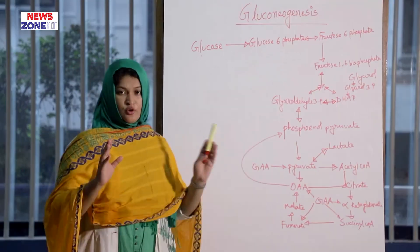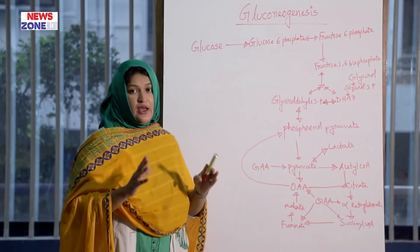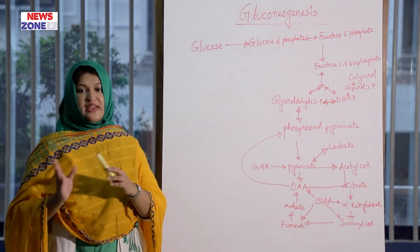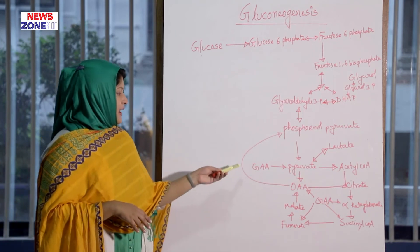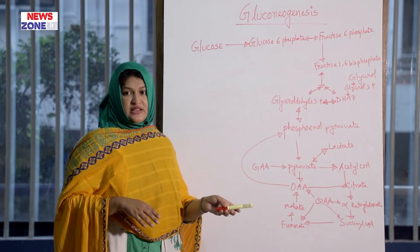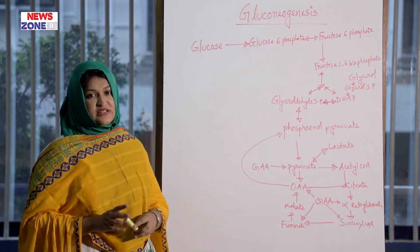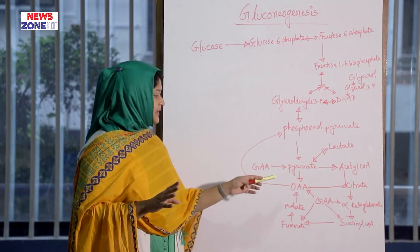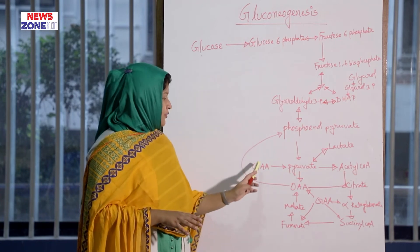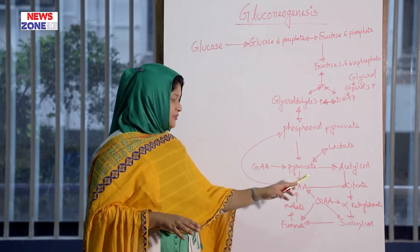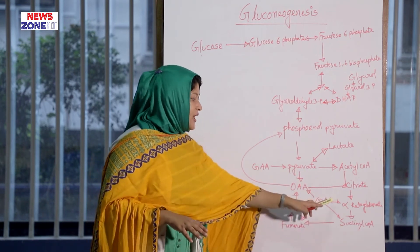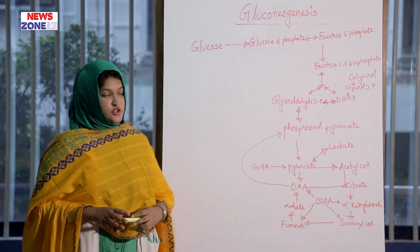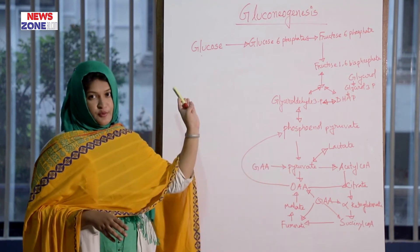The gluconeogenic enzymes are the rate-limiting enzymes that make all irreversible steps reversible. Glucogenic amino acids are all amino acids except leucine and lysine. Through five entry points, glucogenic amino acids can convert into glucose: via pyruvate, succinyl-CoA, alpha-ketoglutarate, fumarate, or oxaloacetate.